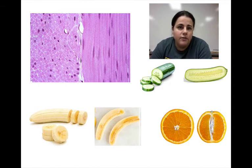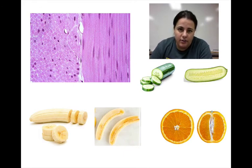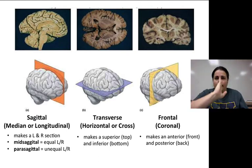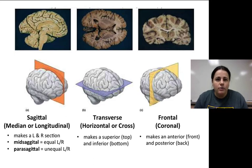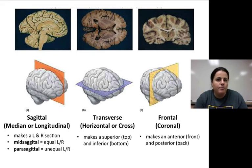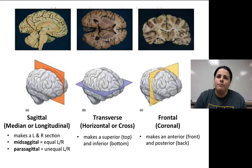Taking sections at different angles is very important for imaging techniques like CTs and MRIs, because it can give a lot of different information. A sagittal section — sometimes called a median or longitudinal section — makes a left and right side. If those sides are equal, it's a mid-sagittal section; if unequal, it's a parasagittal section. A transverse cut — sometimes called horizontal or cross section — makes a top and bottom, which are superior and inferior. A frontal section makes a front and back, or anterior and posterior.